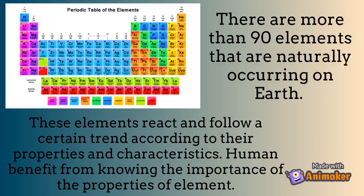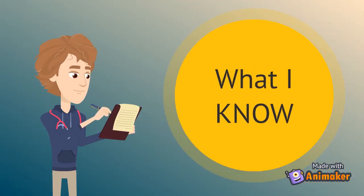There are more than 90 elements that are naturally occurring on Earth. These elements react and follow a certain trend according to their properties and characteristics. Humans benefit from knowing the importance of the properties of elements — we are able to find applications of this knowledge in industries and modern technologies. Let's do the 'What I Know' activity.